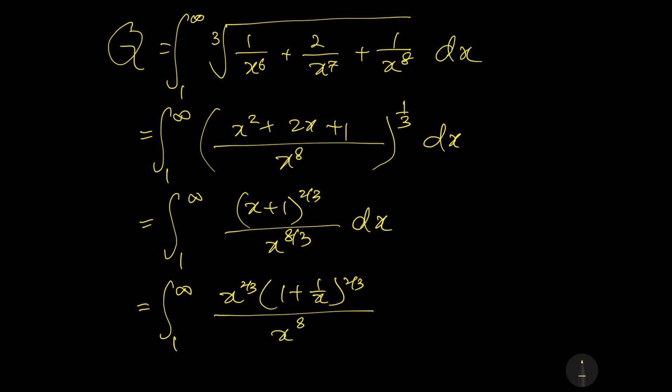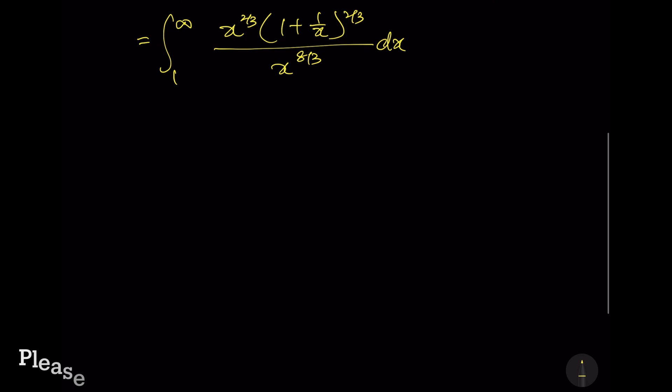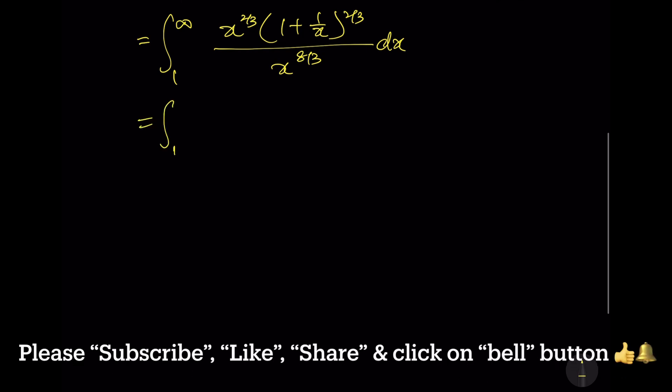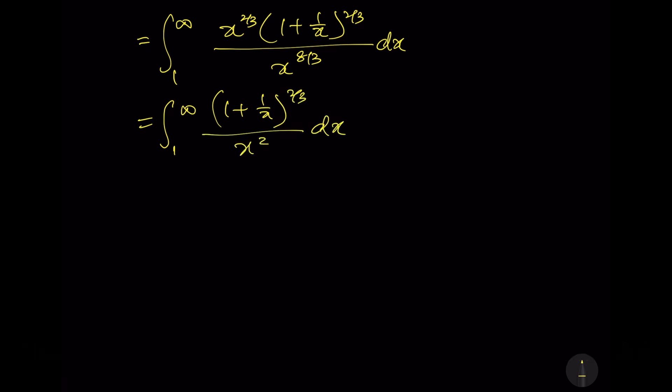Divided by denominator x power 8 over 3. Finally, we can further simplify the integrand where the numerator is 1 plus 1 over x power 2 over 3, and the denominator is x power 2.